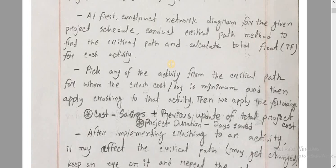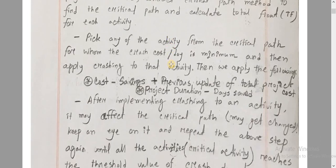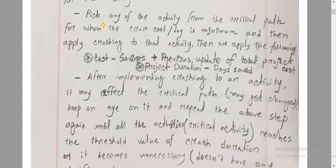So, the first step in project crashing is to use the critical path method where the critical activity is identified. The second step is to pick any activity or activities from the critical path for whom the crash cost per day is the minimum, and then apply crashing to that activity.